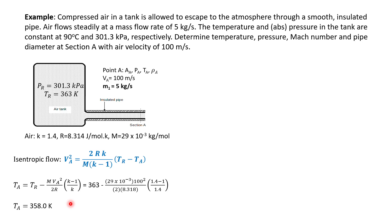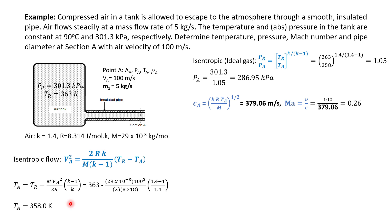With temperature at point A known, we find pressure using the isentropic pressure relationship or isentropic expansion equation between the tank and point A. To find the Mach number, we first calculate the sonic velocity using the temperature at point A, getting 379.06 m/s, then apply the Mach number equation. For the diameter, we cannot directly use the mass flux diameter formula.